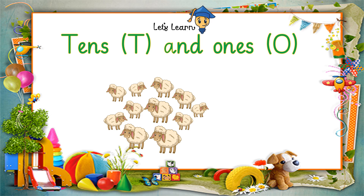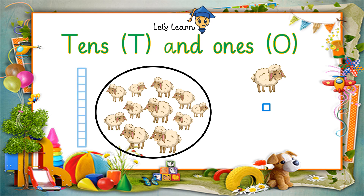Now I am going to tell you how to represent tens and ones. There is a group of 10 sheep and there is one sheep all alone. The one sheep which is alone will be represented by one small box, and 10 sheep will be represented by a big block of 10 small boxes. Ones will be represented by single small boxes, and tens will be represented by a big block of 10 small boxes.